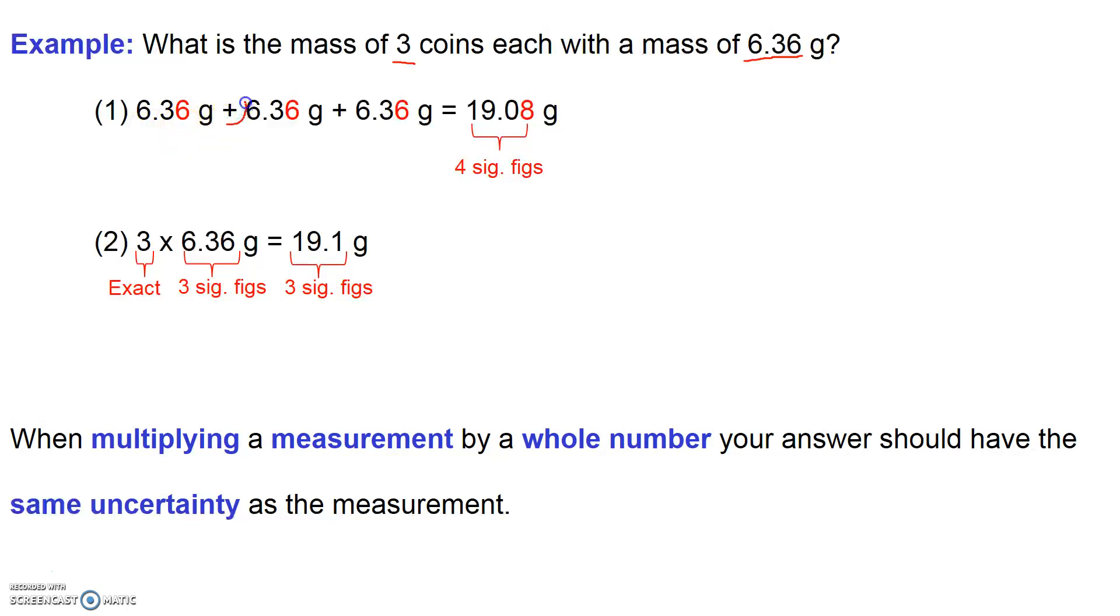so it's all about the uncertainty of my measurements, and in each case my uncertainty would be in the 0.01 position. Therefore, my answer should have uncertainty in the 0.01 position, and that would give me a number with 4 significant figures.